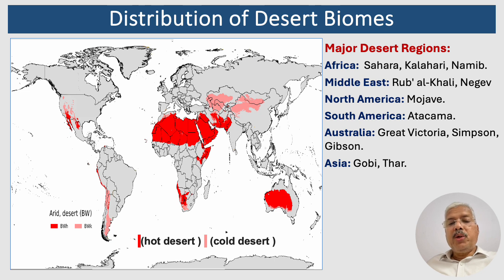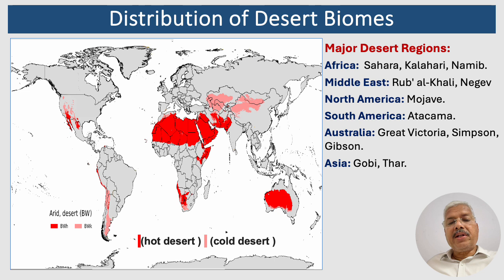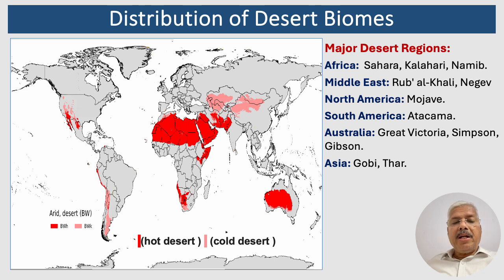As you can see from the map, desert biomes are found in various parts of the world, often forming distinct belts or regions. Major desert regions include: in North Africa, the Sahara Desert — the largest hot desert in the world — stretches across much of North Africa. Other deserts include the Kalahari in Southern Africa and the Namib Desert in Namibia.